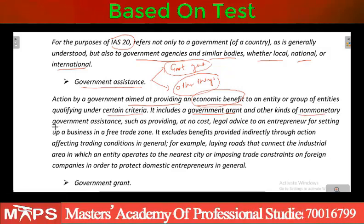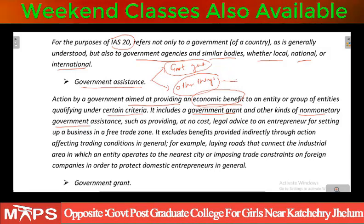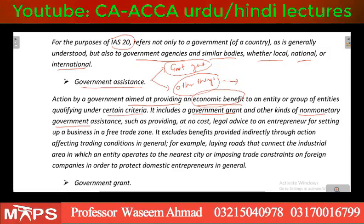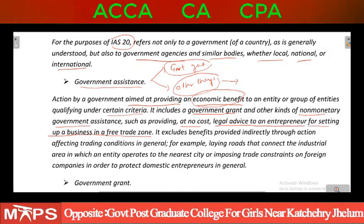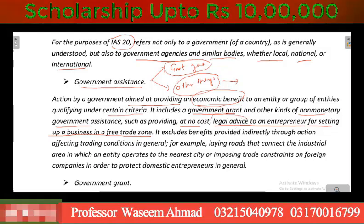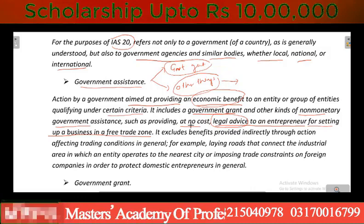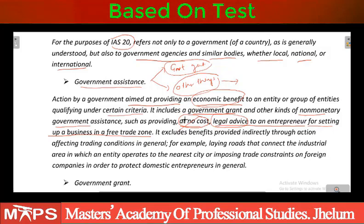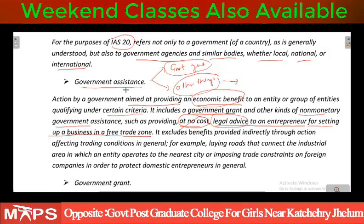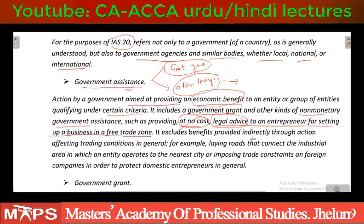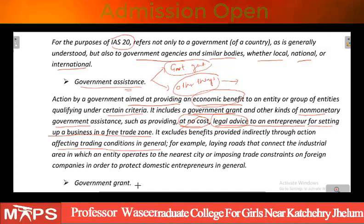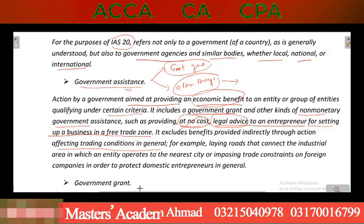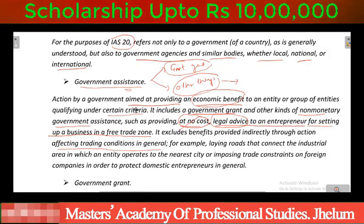Government grant jo rupi hai wo monetary hai — paison ki shakal mein milegi. Lekin other things jo hain, government assistance jo hai wo non-monetary form mein bhi ho sakti hai, such as providing at no cost legal advice to an entrepreneur for setting up a business in a free trade zone. Ab government ne kuch paisa nahi diya lekin government ne legal advice jo hai wo provide ki hai — at no cost, free of cost. Toh uski jo cost saving ho gayi hai to ye grant mein nahi ayega, assistance mein ayega. It excludes benefit provided indirectly through action affecting trading conditions in general — overall jo government sab logon ke liye kaam kar rahi hai, for example road construct kar rahi hai — wo ek particular entity ke liye nahi hai, to wo government assistance mein nahi ayega.